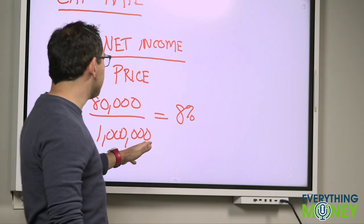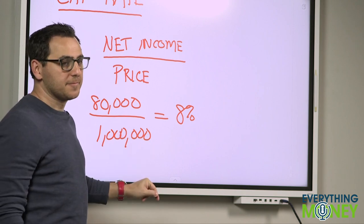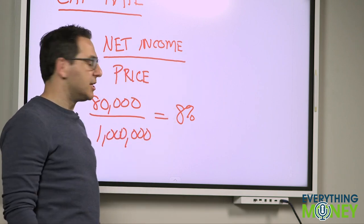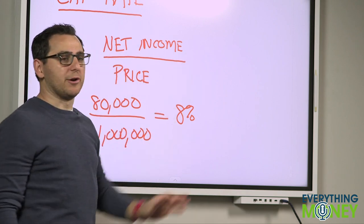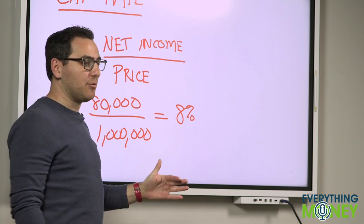So this basically means if you paid cash for the property, not including any appreciation, you'd make 8% per year on your money. It's a very simple metric from that standpoint.